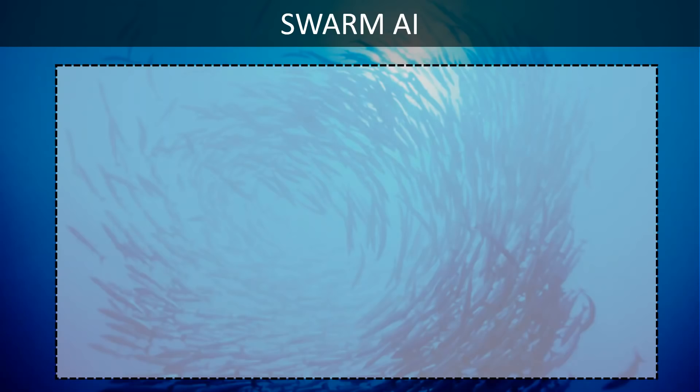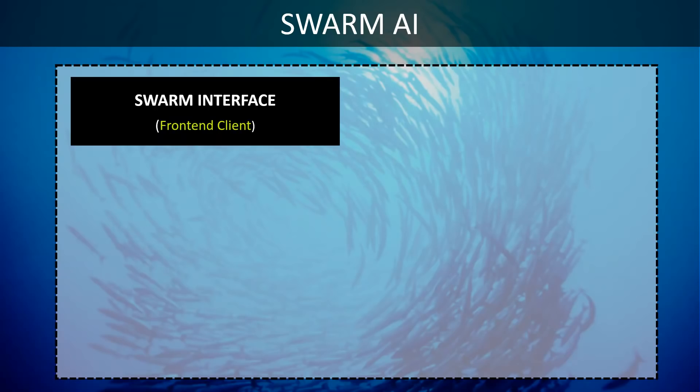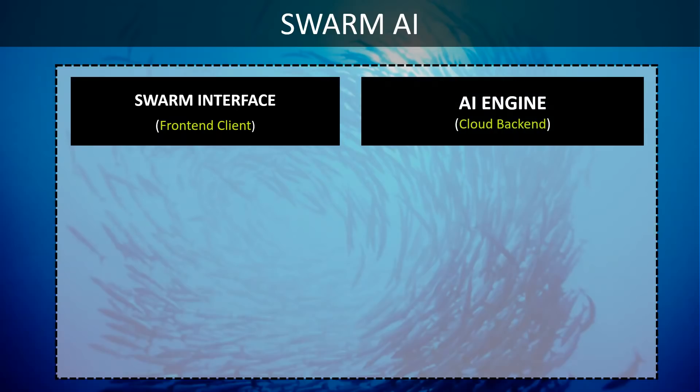The Swarm AI system has two primary components: the Swarm interface, which is the front-end client, and the AI engine, which is a cloud back-end.